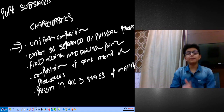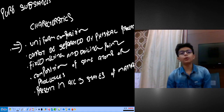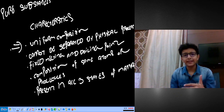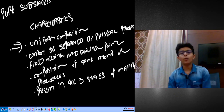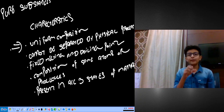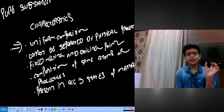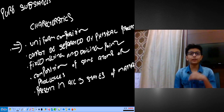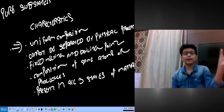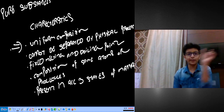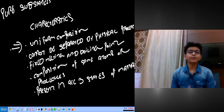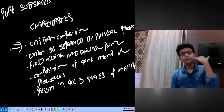Now let's talk about characteristics. The first characteristic is uniform composition. For example, water is a pure substance because it is a compound made up of a molecule. The same H2O molecules are present throughout — above and below. There are no different properties like H2O here and H4O there. Same molecule throughout — which is a pure substance. It is a very important characteristic.